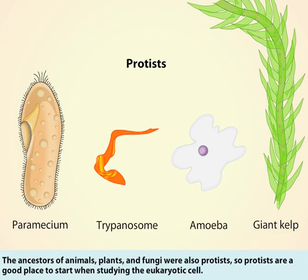The ancestors of animals, plants, and fungi were also protists, so protists are a good place to start when studying the eukaryotic cell.